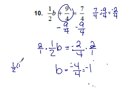1 half times negative 1 plus 9 fourths, get a common denominator. This is going to be negative 2 fourths plus 9 fourths equals 7 fourths.